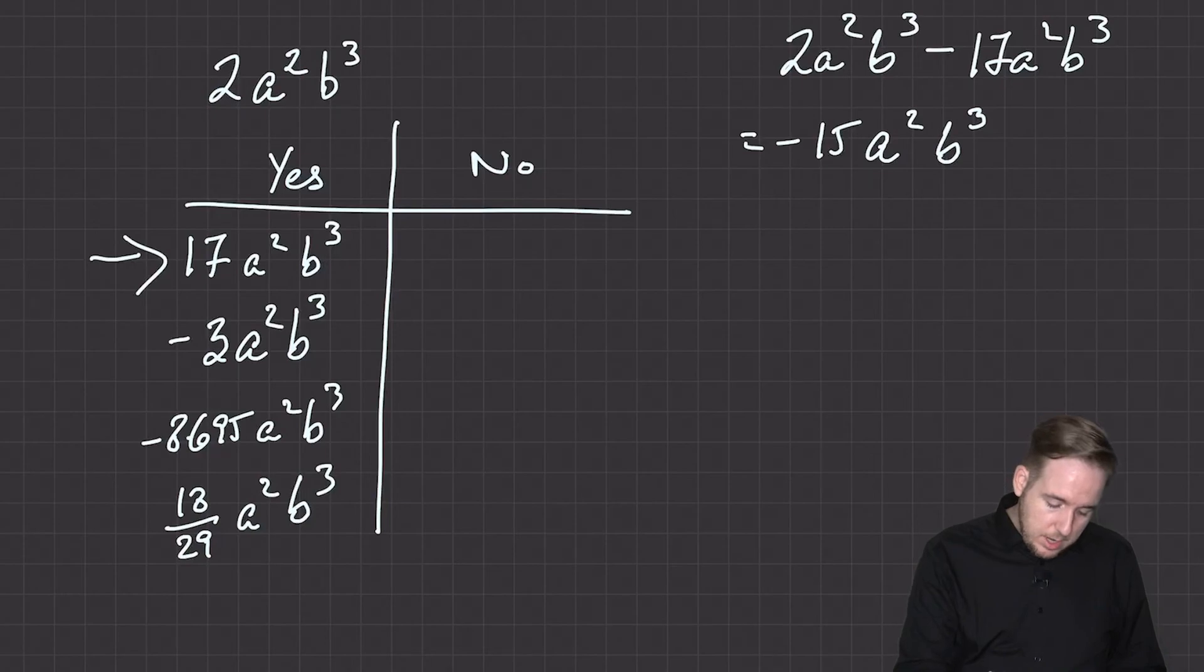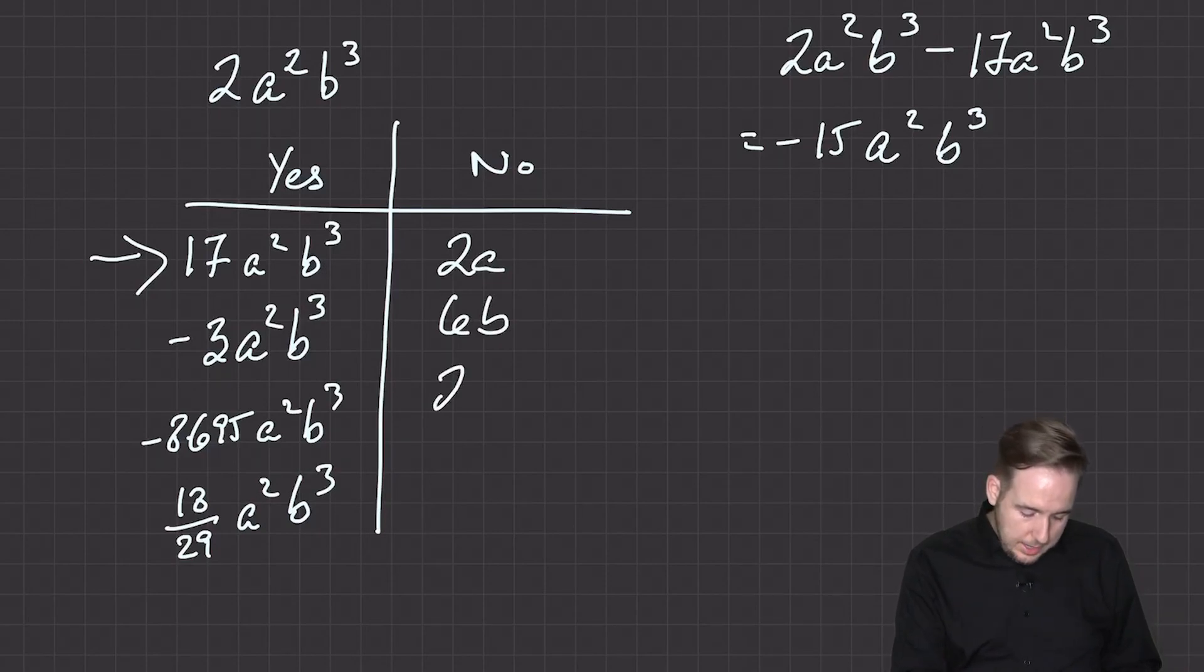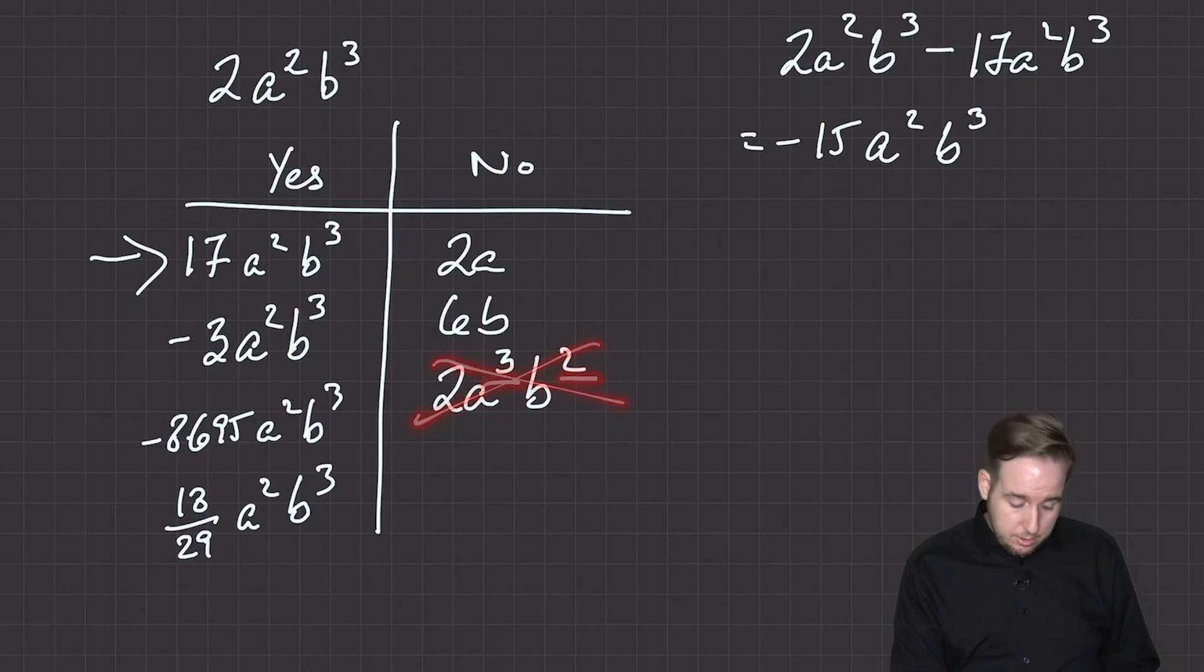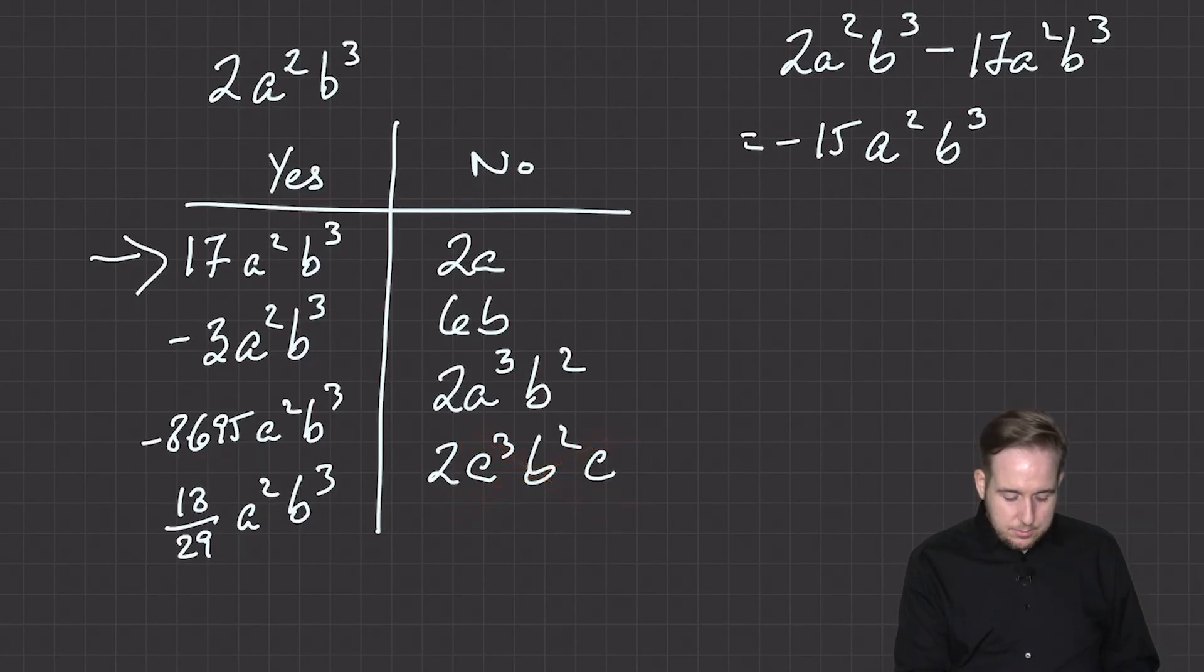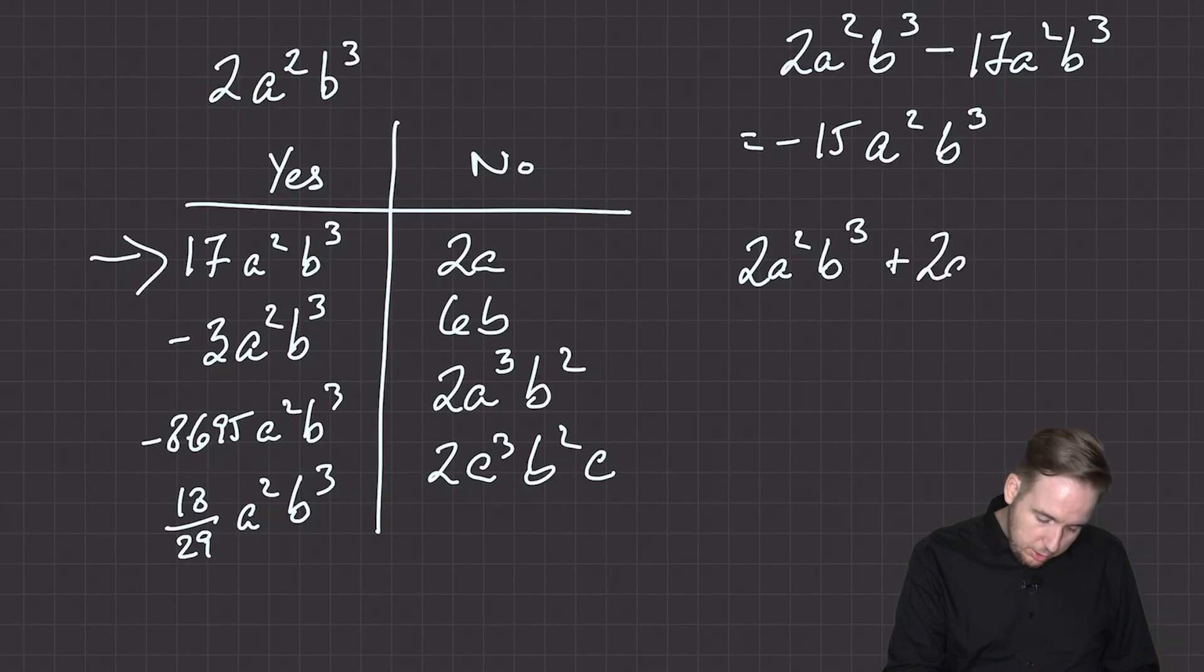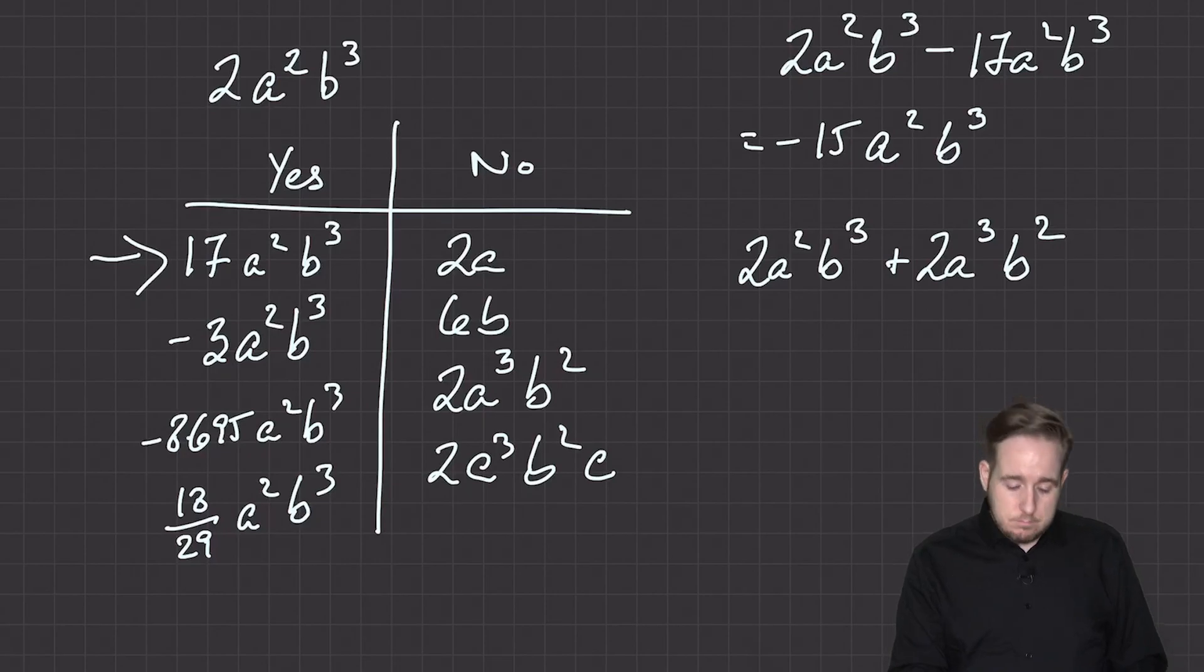All of those are like terms, and I could keep the letters the same. So let's do this one. Let's do 2a squared b cubed minus 17a squared b cubed. And so I keep the letter part exactly the same. 2 take away 17 is minus 15. And that's what simplifies to. How about no? Well, anything else. So what would not count is something like 2a, 6b. Even if I had the same letters, 2a cubed b squared. So that's a 2 here and a 3 here. That's a 3 here and 2 there. Those don't count as like terms. Even if I have everything and a little bit extra, 2a cubed b squared c. Again, not a like term. Unless the letters match up exactly, they're not like terms. They can't be added together.